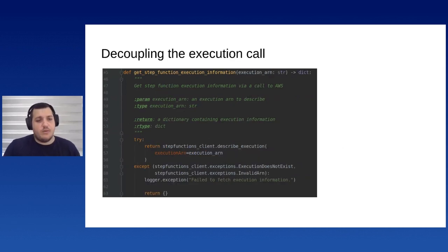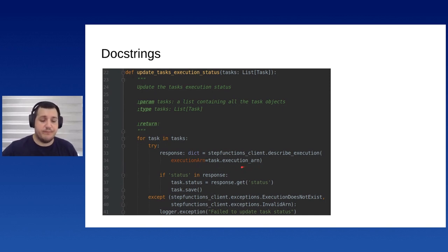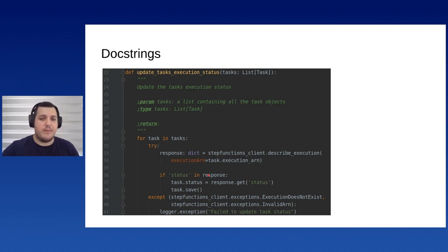Going back a slide, on line 33 we're making a call to AWS Step Functions to get task information, and we have a try block wrapping quite a bit of code. This function is currently doing two things — making an API call and updating tasks — so it might make sense to decouple that to avoid code duplication going forward.